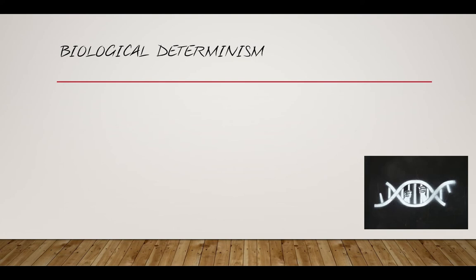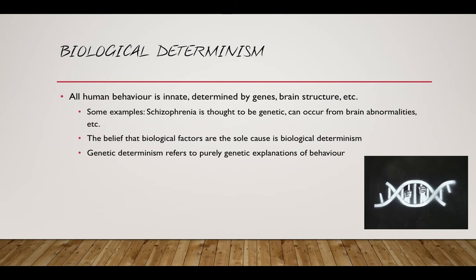There are several types of determinism you need to know. The first is biological determinism. All human behaviour, according to biological determinism, has a physiological cause. This could be the result of genes, brain structure, etc. Some examples might be schizophrenia, which is thought to be partly genetic, but can also be explained through brain abnormalities. The belief that biological factors are the sole cause is what is referred to as biological determinism.